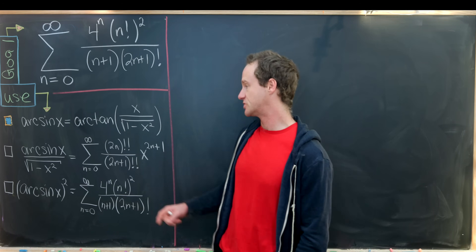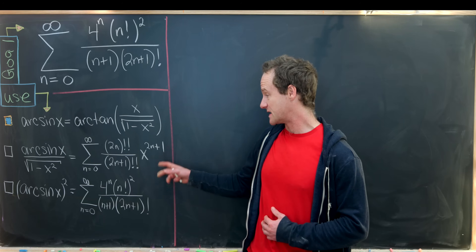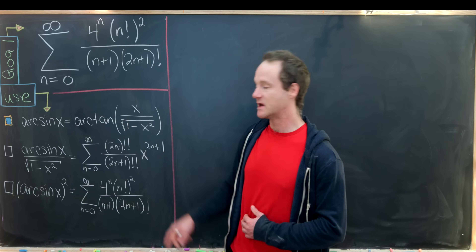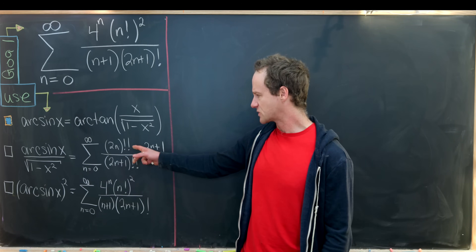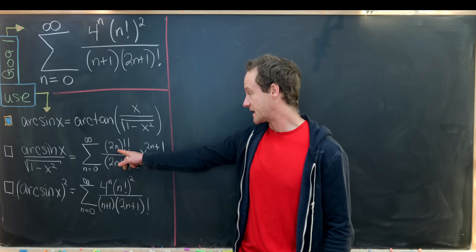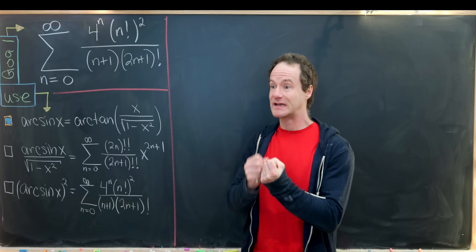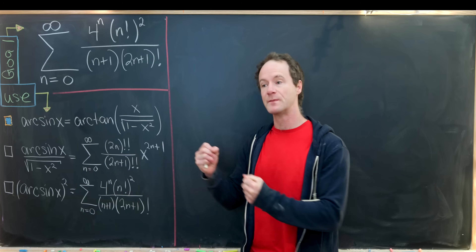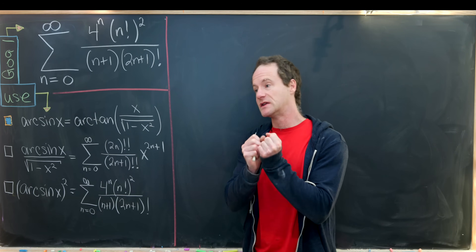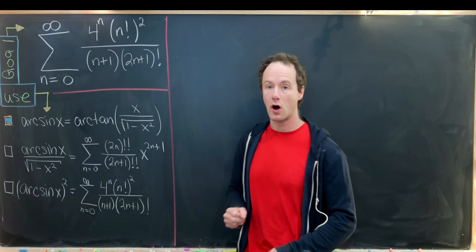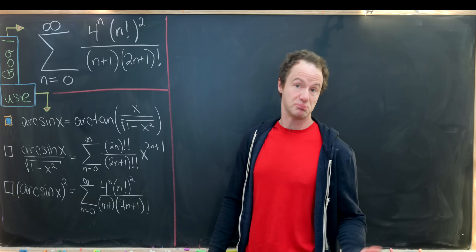The second tool is a series expansion of arcsin(x)/√(1 - x²), which expands as the sum from n=0 to infinity of (2n)!! / (2n+1)!! times x^(2n+1). The double factorial (2n)!! is the descending product 2n · (2n-2) · (2n-4) · ... · 2, skipping every other number. Similarly, (2n+1)!! = (2n+1) · (2n-1) · (2n-3) · ... · 1.